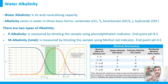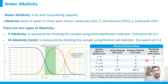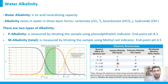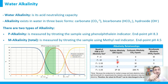For example, in a drinking water sample at pH 7, there is no P-alkalinity, so all alkalinity is the M-alkalinity, which comes from bicarbonate (HCO₃⁻). In another case, if P-alkalinity equals M-alkalinity, that means all alkalinity comes from hydroxide ions — for instance, in distilled water with added caustic soda (NaOH), where there is no carbonate or bicarbonate.